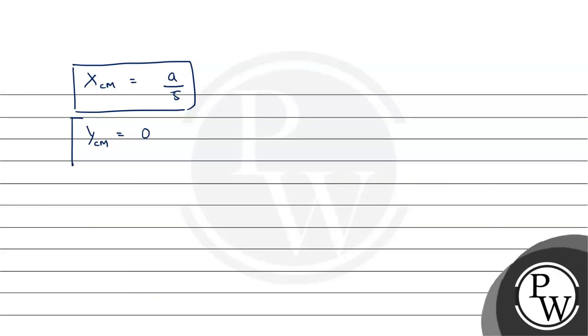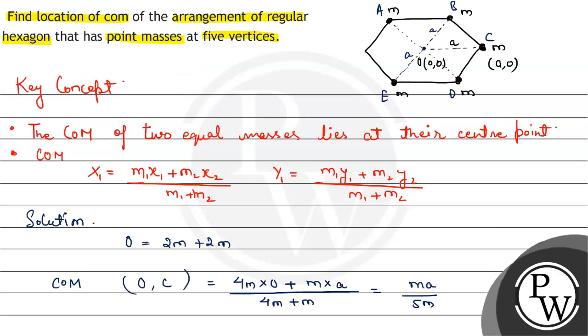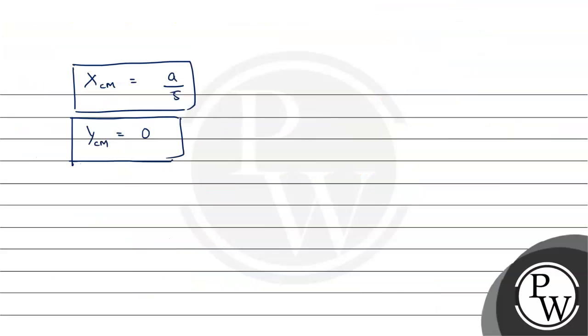Theoretically we can say that y coordinate of center of mass will be 0 because if we assume 4m to be at point O and m to be at point C, then there is no mass above the x-axis and hence y coordinate of center of mass will be 0.